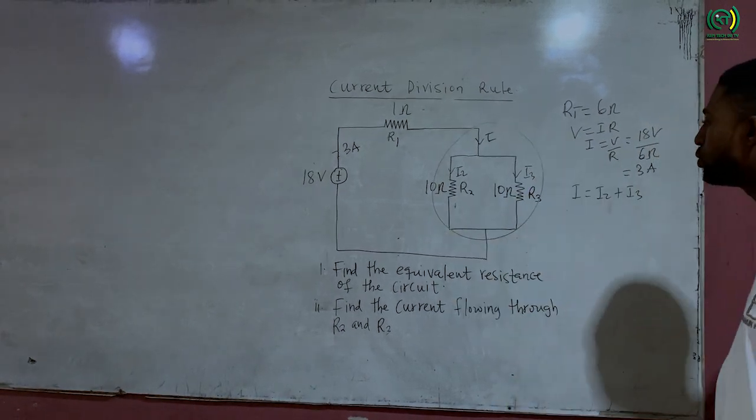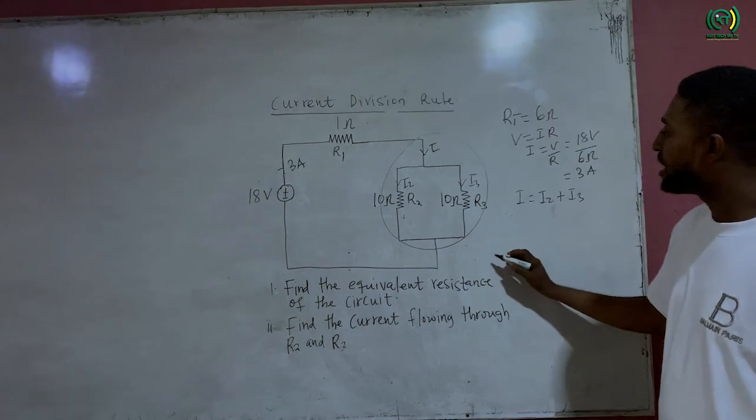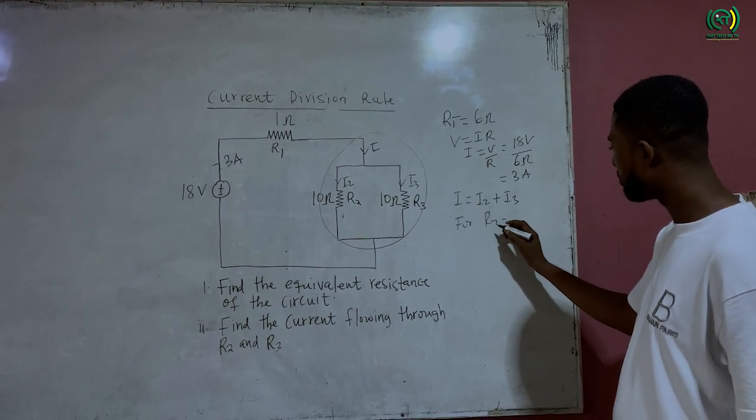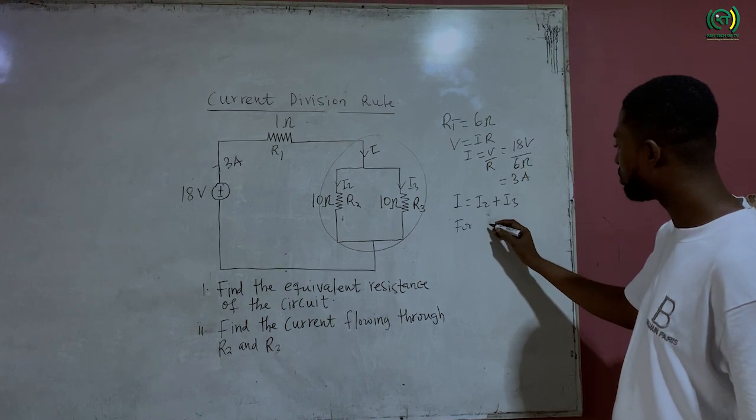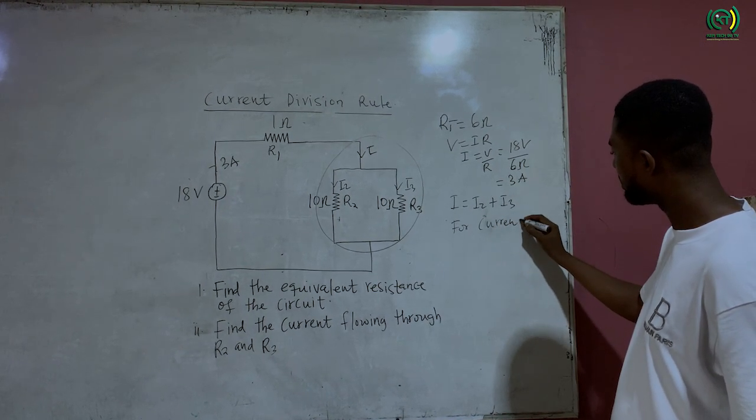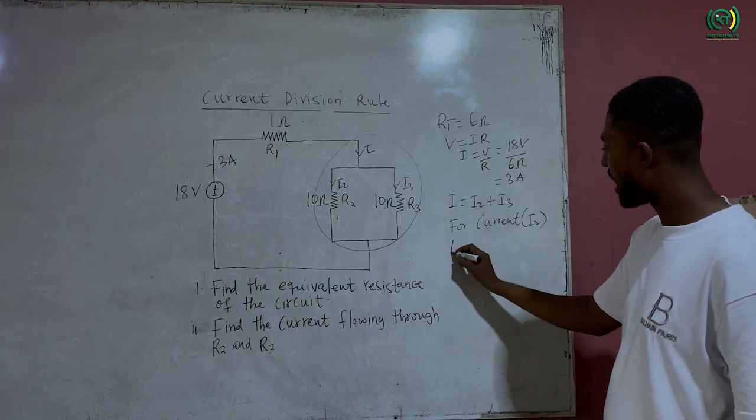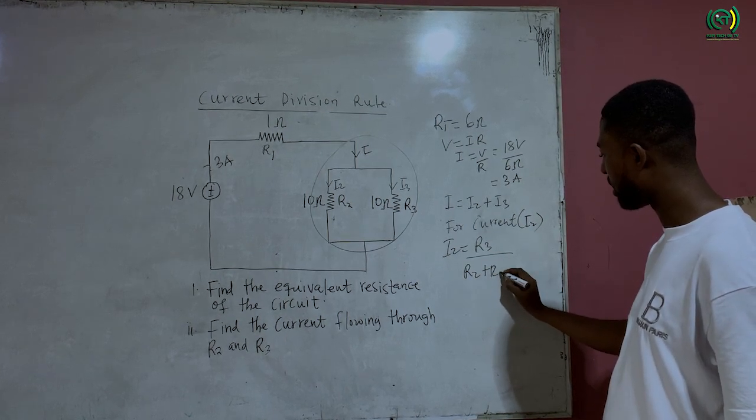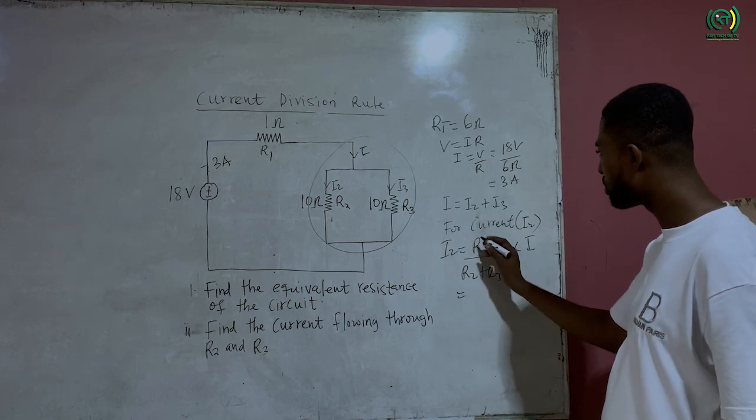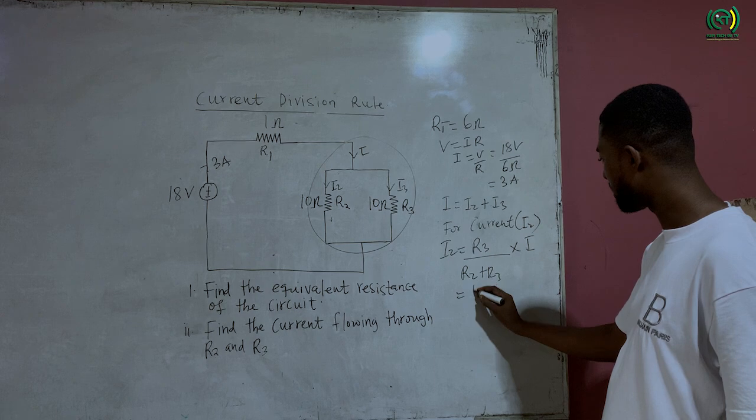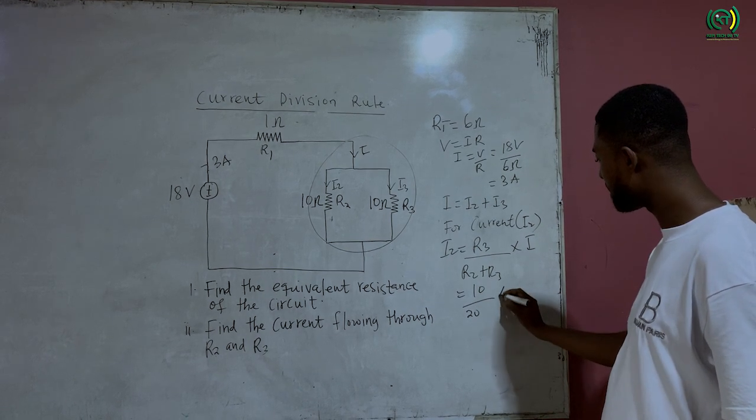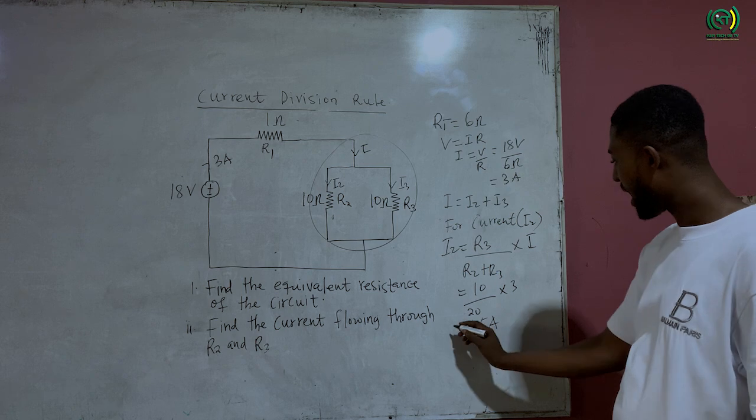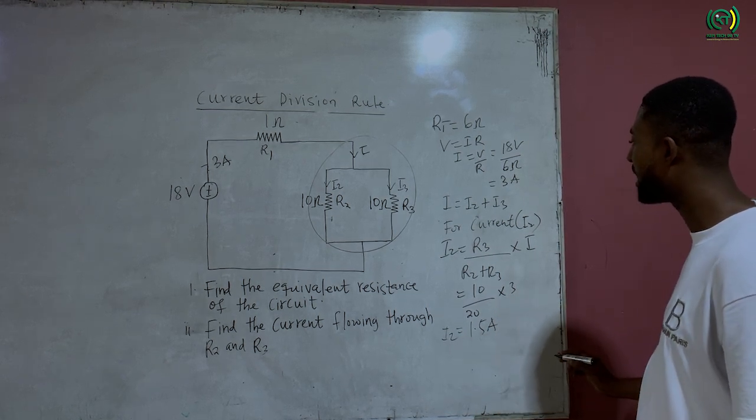And here we can apply the current divider rule to calculate the current entering resistor R2. So for current I2, I2 will be equal to R3 over R2 plus R3 times I. So here will be equal to 10 over 20 times 3 giving us 1.5 amps.